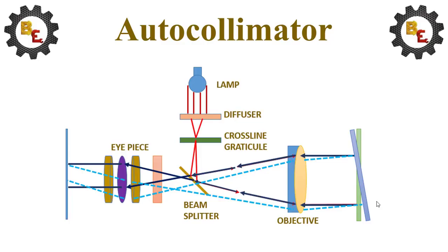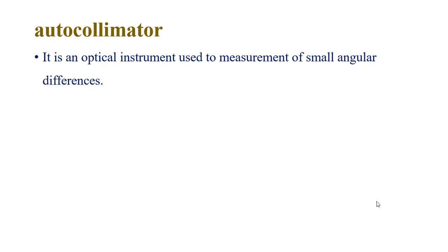Hi, let me see the autocollimator. Autocollimator is an optical instrument used to measure small angular differences. It provides a very sensitive and accurate approach for small angular difference.